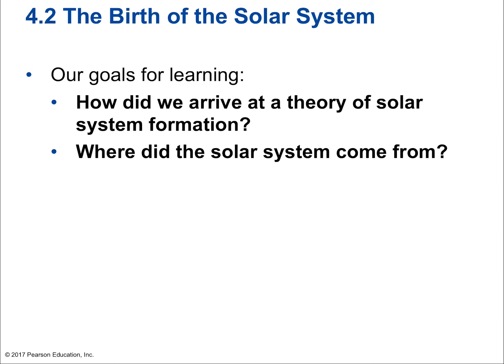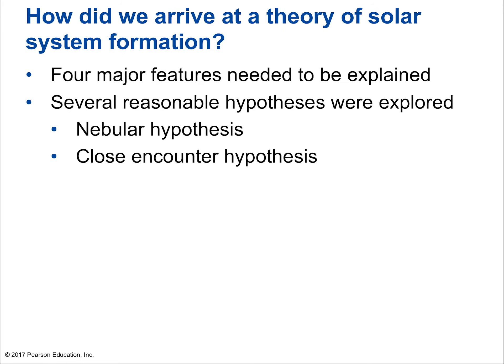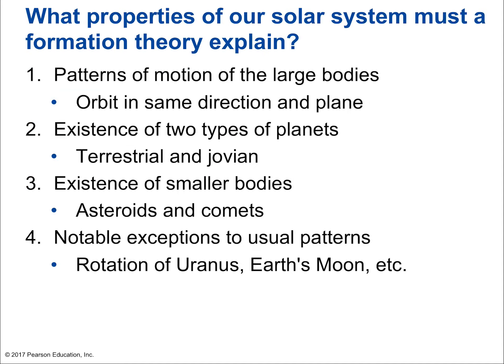Looking at section 4.2, the birth of the solar system. Our goals for learning are to find out how we arrived at a theory of solar system formation and where the solar system came from — understanding the process of science and getting into the details. A good theory needs to cover the major features. We have several reasonable hypotheses that were explored: the nebular hypothesis and the close encounter hypothesis.